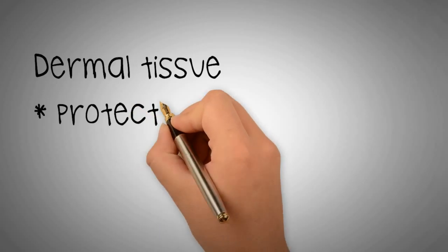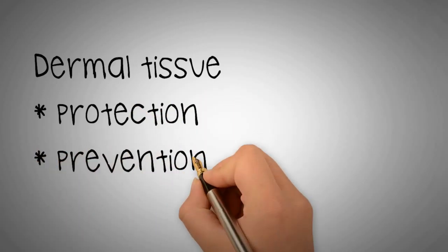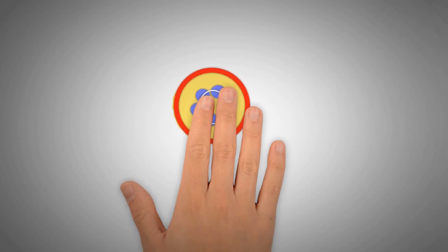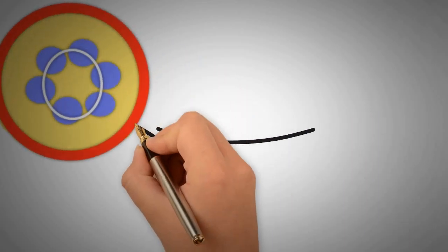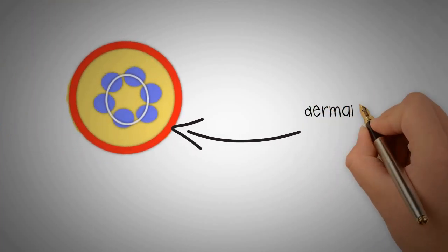Dermal tissue covers the outside of all plant parts. The function is to protect the plant and to help prevent water loss. In this diagram, the epidermis of the plant can be seen in red. Old roots have dermal tissue called periderm.